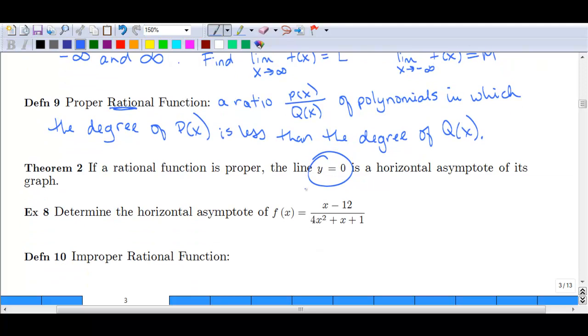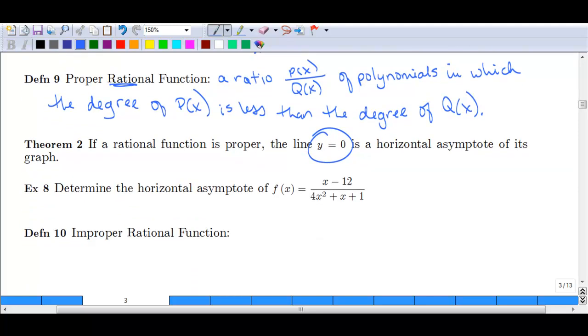So for instance, if we look at example 8 here, we have x minus 12 over 4x squared plus x plus 1. And you can see here we've got an exponent of 1 on the x, an exponent of 2 in the denominator. That's our degree up here is 1, and the degree in the denominator is 2. So 1 is less than 2, our horizontal asymptote is at y equals 0. This will just level out along the x-axis as it goes off to infinity and back to negative infinity.